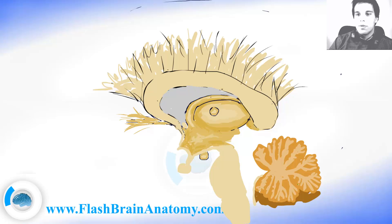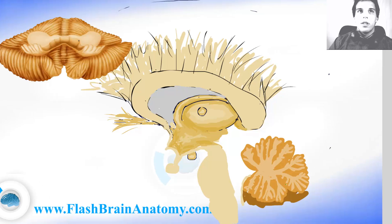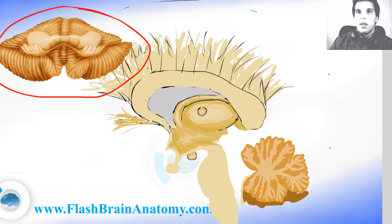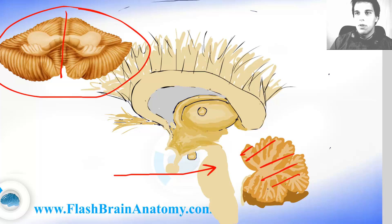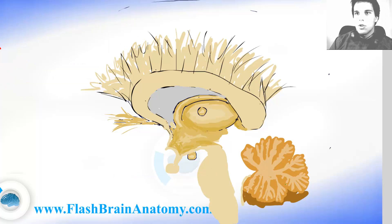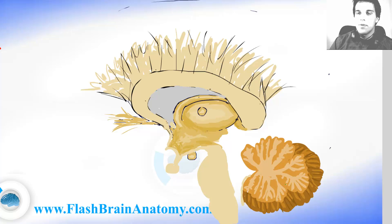We're looking at the vermis of the cerebellum. If I bring in the cerebellum here, we're looking at it from the ventral point of view. We have made a cut right here through the vermis, and that's the surface where we made the cut. So it's logical that there is a hemisphere more lateral here to be illustrated.